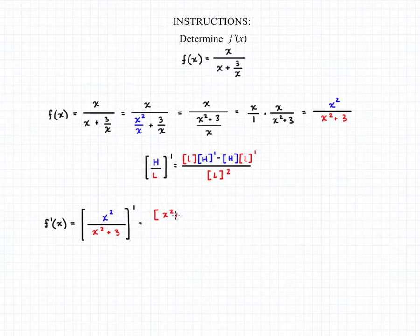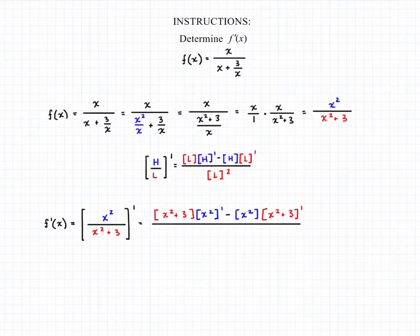So if we plug this in, we'll have x squared plus 3 multiplied by the derivative of x squared, and from that we're subtracting x squared multiplied by the derivative of x squared plus 3. And this is all going to be over x squared plus 3, the quantity squared.